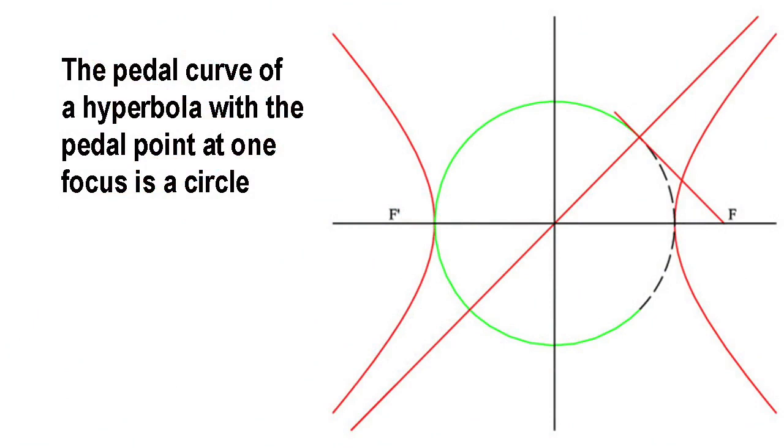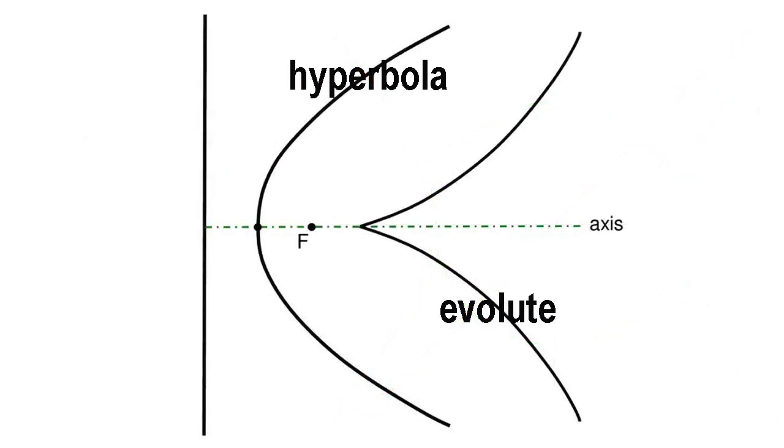The pedal curve of a hyperbola, with one focus as the pedal point, is a circle. The pedal of a rectangular hyperbola, with its center as the pedal point, is a lemniscate. The evolute of a hyperbola is a Lamé curve.